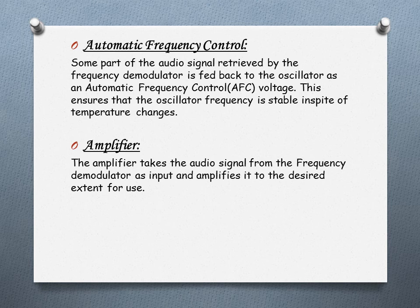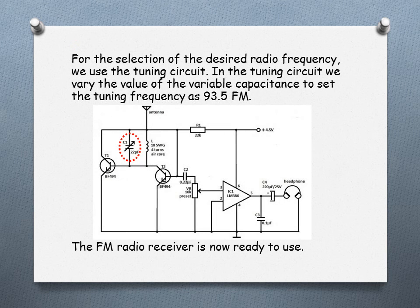The next part is the amplifier, which amplifies the signal coming from the frequency demodulator. We vary the variable capacitance to tune the circuit. For the selection of the desired radio frequency, we use the tuning circuit. In the tuning circuit, we vary the value of the variable capacitance to set the tuning frequency. By varying the capacitance, the LC value changes, which changes the resonance frequency of the circuit to the frequency we wish to receive. This is how the circuit is tuned, and the FM radio receiver is now ready to use.